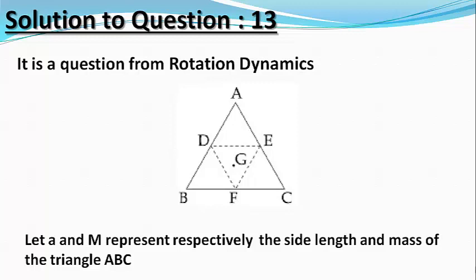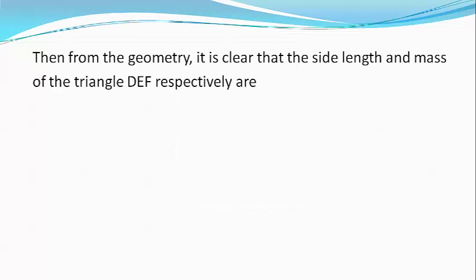Let A and capital M represent respectively the side length and mass of the triangle ABC. Then from the geometry, it is clear that the side length and mass of the triangle DEF are A by 2 and M by 4 respectively.